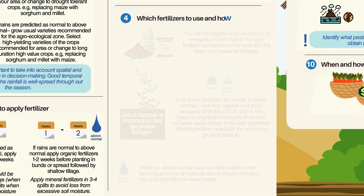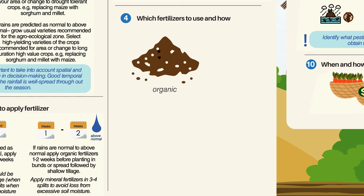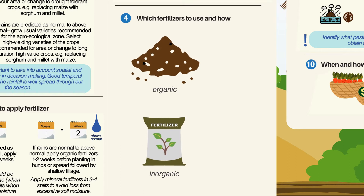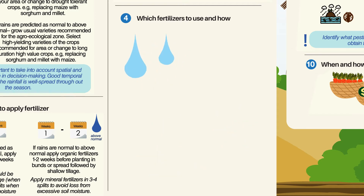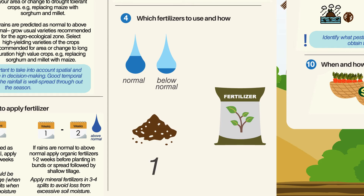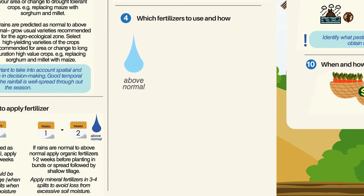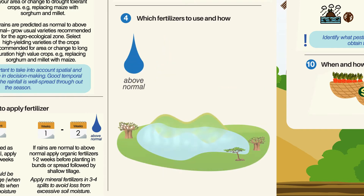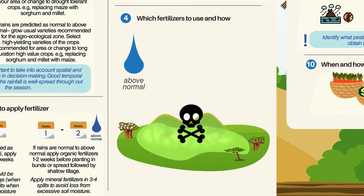Which Fertilizers to Use and How: This can be organic such as manure, or inorganic, or both. Select the right fertilizer mix based on the soils, the crops, and seasonal forecast. If rains are predicted as normal to below normal, use less organic and more inorganic fertilizers — at half to three-quarters of rate — because significant amounts of unused nutrients could remain in the soil, potentially affecting fertilizer needs for the upcoming growing season. However, above normal rains can also lead to more leaching and loss of nutrients due to erosion, resulting in eutrophication of water bodies.